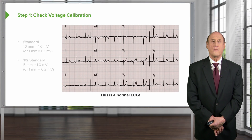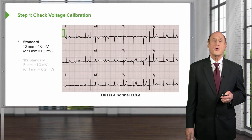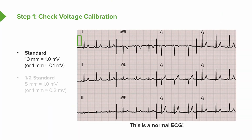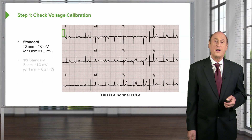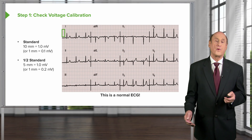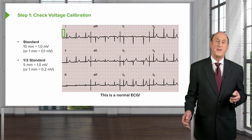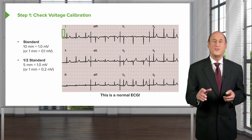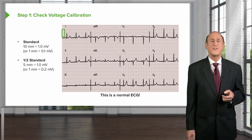Here is a normal ECG. Notice in the upper left corner there is a little green box — that's the standard. If you count the little tiny boxes, there are ten little boxes. Each one of the big boxes has five smaller boxes, so there will be two of the big boxes constituting ten small boxes. Each one of those boxes is one millimeter and corresponds to one millivolt of electrical activity. This is the standard on all ECG machines. If you set the standard to half, each little box would represent less voltage; if you doubled it, more voltage. But almost all EKGs use this green box of the ten standard.